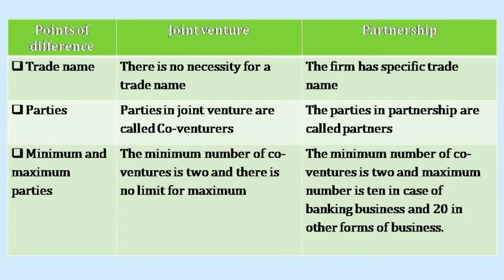In a joint venture, parties are called as co-venturers. Whereas in case of partnership, parties are called partners. The third difference is the minimum and maximum number of persons or parties in this business.